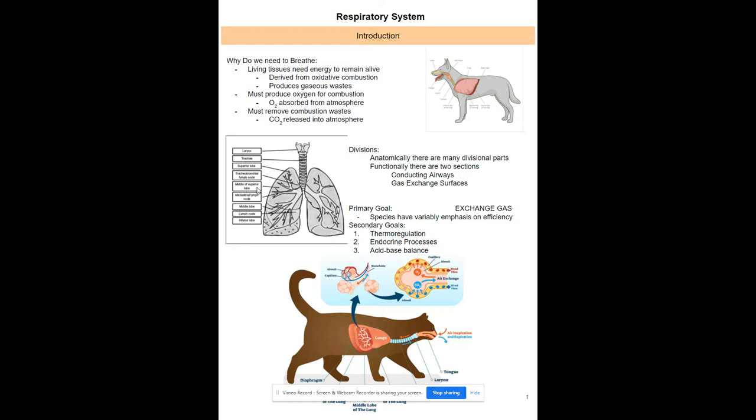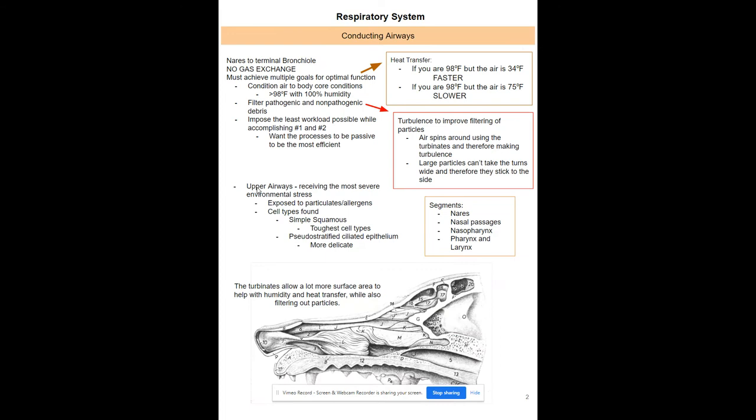Obviously the primary goal is to exchange gas — you want to swap out your CO2 waste for oxygen. Other goals that work with the respiratory system include thermoregulation, endocrine processes with hormones, and acid-base balance, which has to do with the pH of your blood.